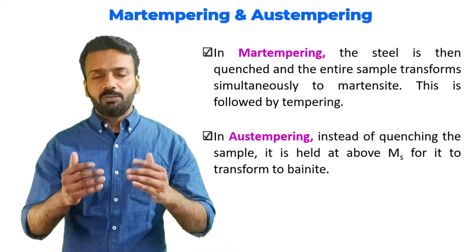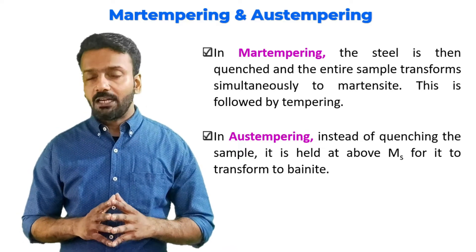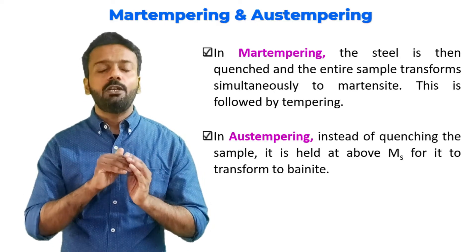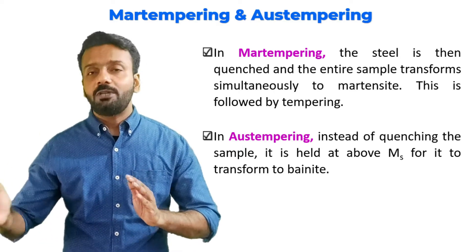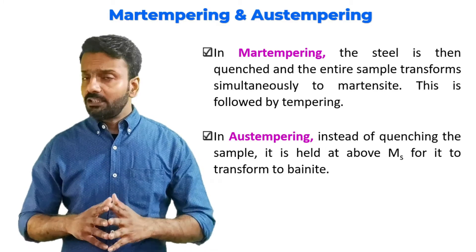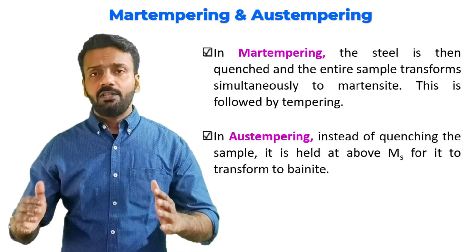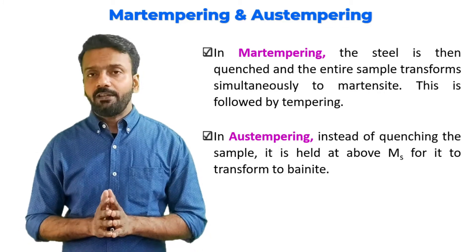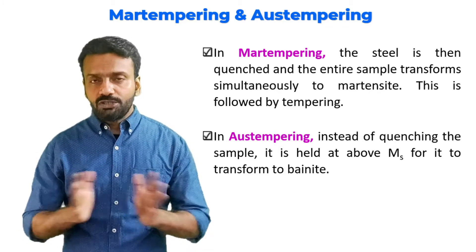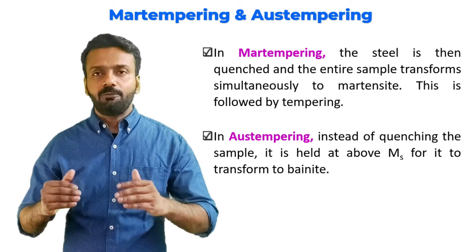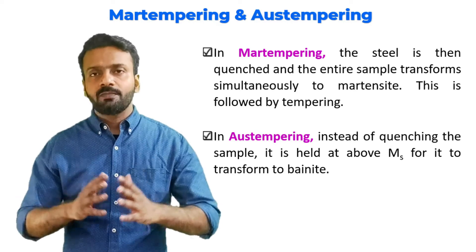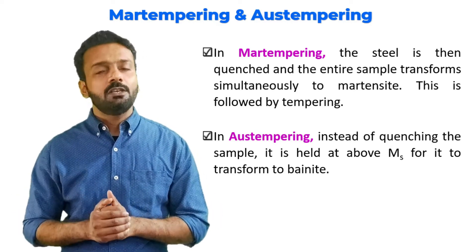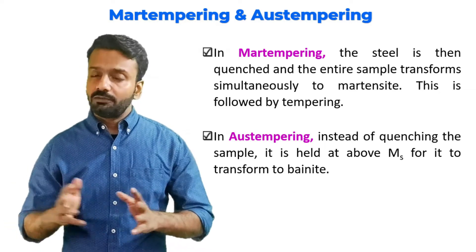In austempering, we similarly heat the material above the martensitic start transformation temperature, but instead of forming martensite, we hold the material there and transform it into bainite. After bainite has formed, we cool the material to room temperature. In both heat treatments, there is no non-homogeneity — the material is uniform throughout before transformation occurs.